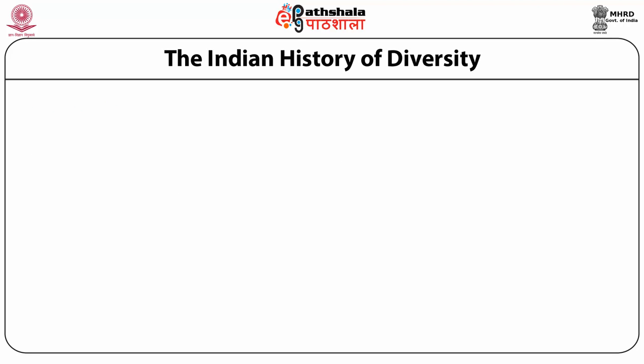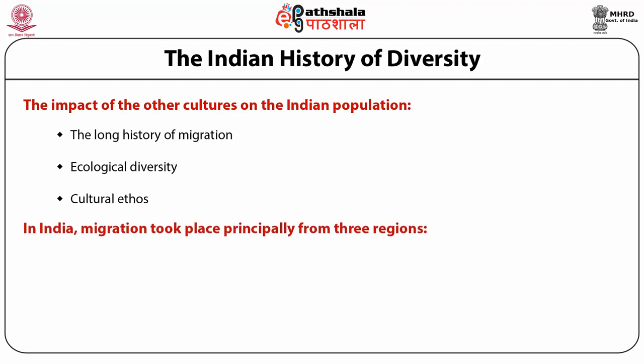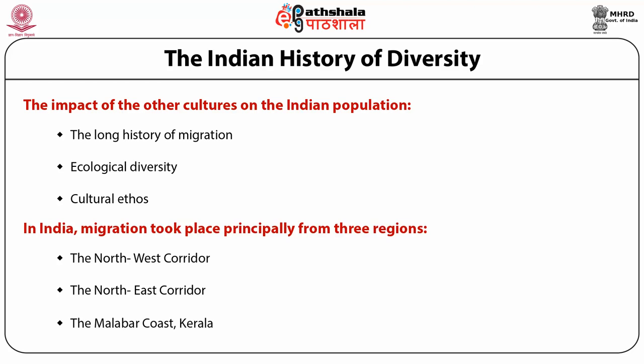The impact of other cultures on Indian population can be seen through the long history of migration, ecological diversity and cultural ethos. In India, migration took place principally from three regions: number one, the Northwest Corridor; number two, the Northeast Corridor; number three, the Malabar Coast, Kerala.